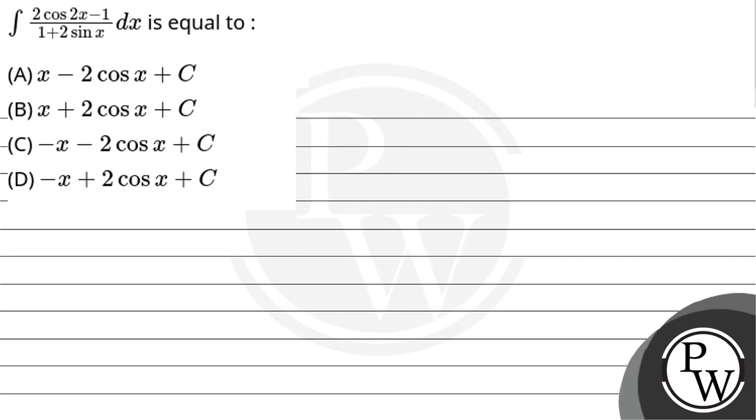Hello bachow, let's read the question. Integration of (2cos2x - 1)/(1 + 2sinx) dx is equal to: